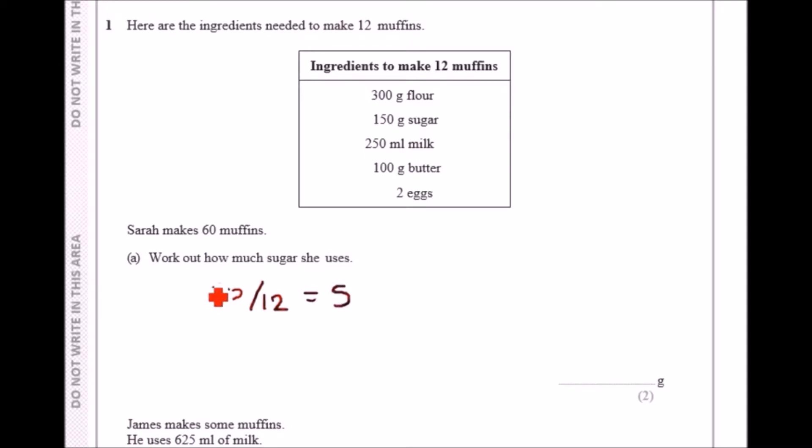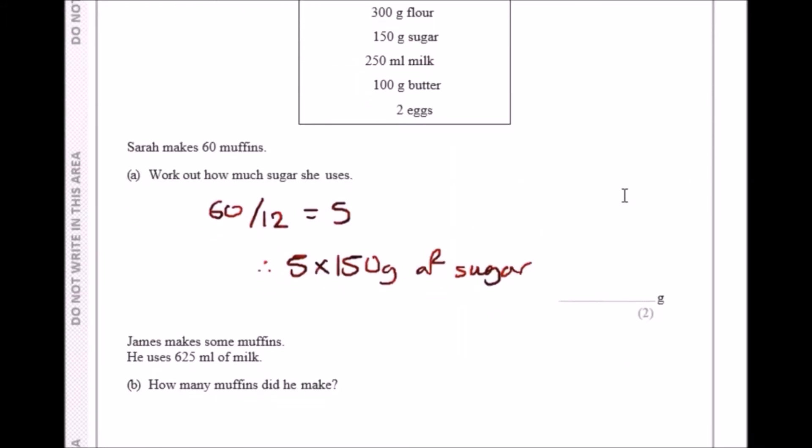This means she needs 5 times as many of each ingredient. Because she wants sugar, we can say she needs 5 times 150 grams of sugar to make exactly 60 muffins. Of course she needs 5 times everything else. You can't just increase sugar and nothing else. But specifically for sugar, enter this in the calculator: 5 times 150, and you should get 750 grams.